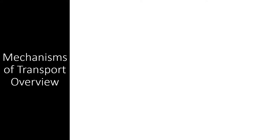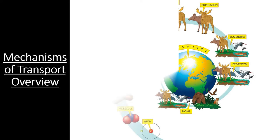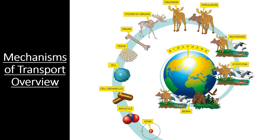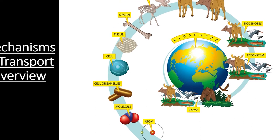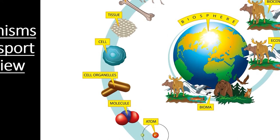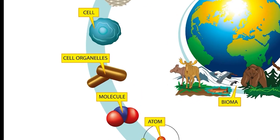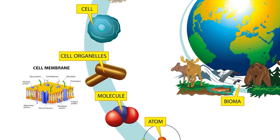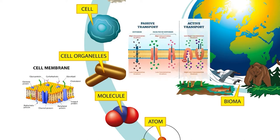This section is all about how different mechanisms of transport work together to create living cells, tissues, organs, and organisms. In previous videos, we covered the basics of the cell membrane and the integral membrane proteins that create the fluid mosaic model. Then we looked into all the different types of membrane transport.